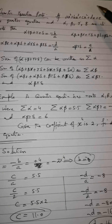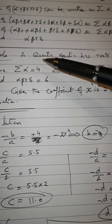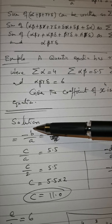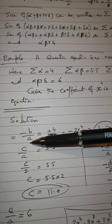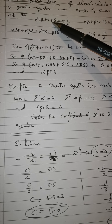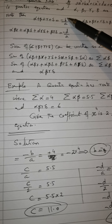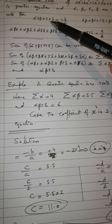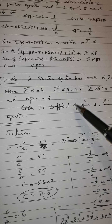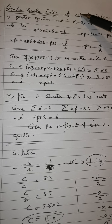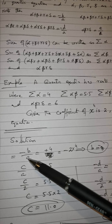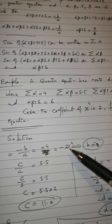We know Σα = −b/a. This summation is given as 4, and the value of a is 2 (the coefficient of x⁴). So we put −b/2 = 4, and by cross multiplication we get b = −8.